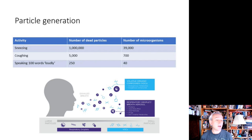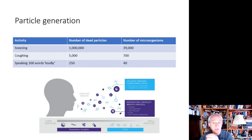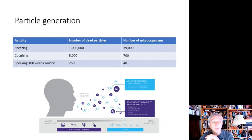We also generate particles from our mouth and nose in the form of visible droplets — as you know when you sneeze — and also sub-visible droplets, which is why mask control is important. The act of sneezing produces about a million particles, of which around just under 40,000 are considered to be microbial.